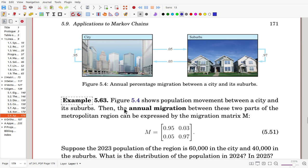This figure is showing annual percentage migration between a city and its suburbs. And each year, 95% of people is staying or moving inside a city, but only 5% are moving out to its suburbs. And from suburbs, 97% is staying, now 3% is moving to the city.